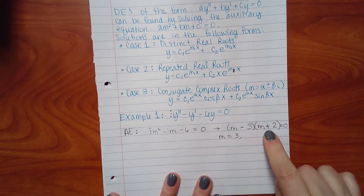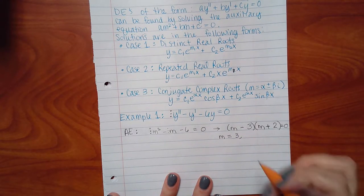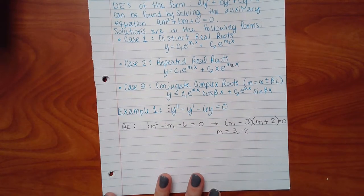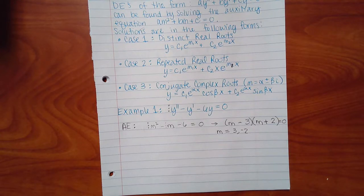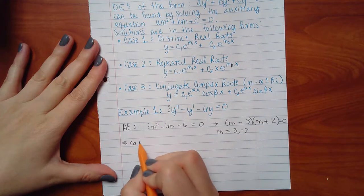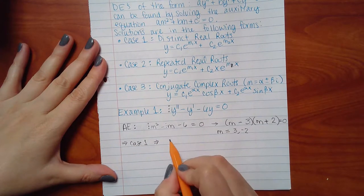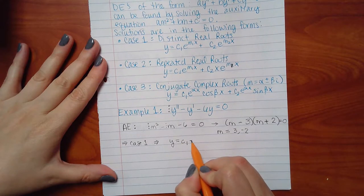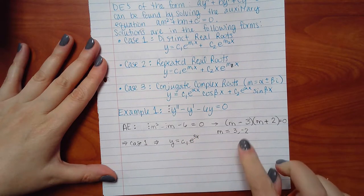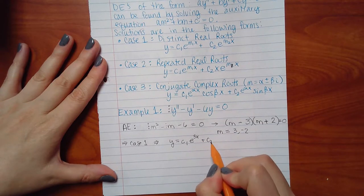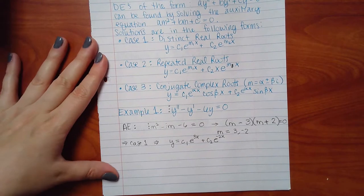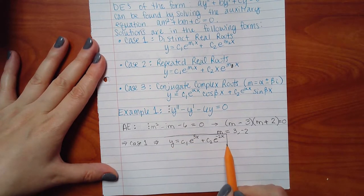Setting each factor equal to zero: from (m minus 3), m equals positive 3; from (m plus 2), m equals negative 2. Since the two solutions are different from each other, this is a Case 1 scenario. The general solution is y equals c₁ e to the 3x plus c₂ e to the negative 2x.